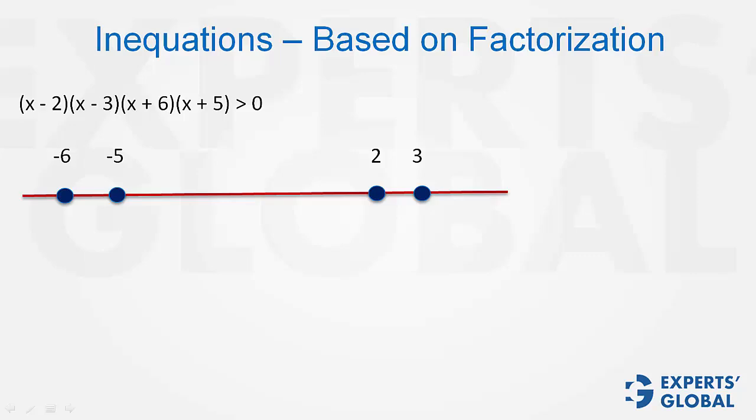Now, see, of these four values, which value is the smallest? x-3 is the smallest value, represented by this respective node.